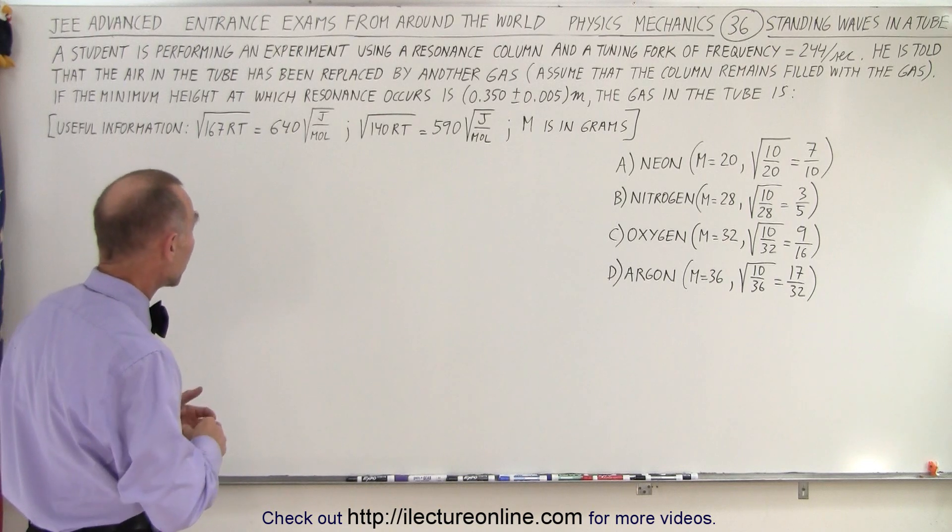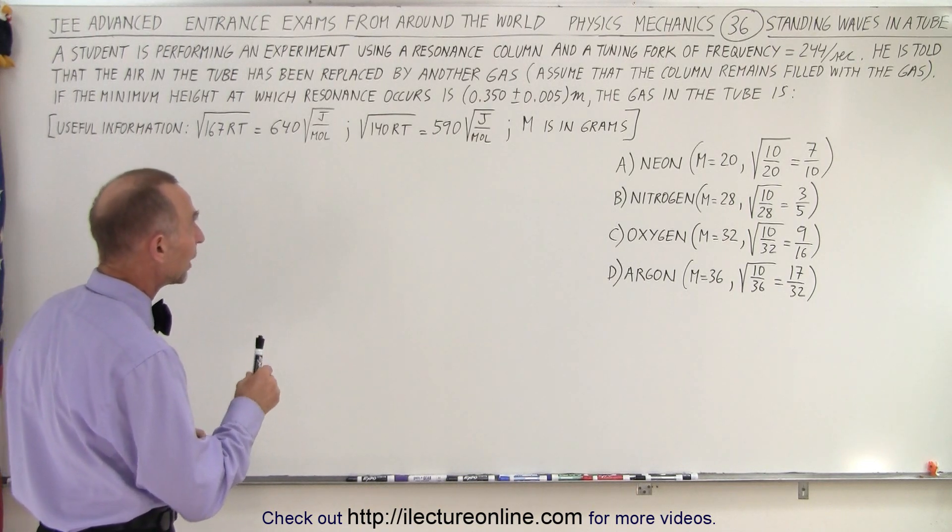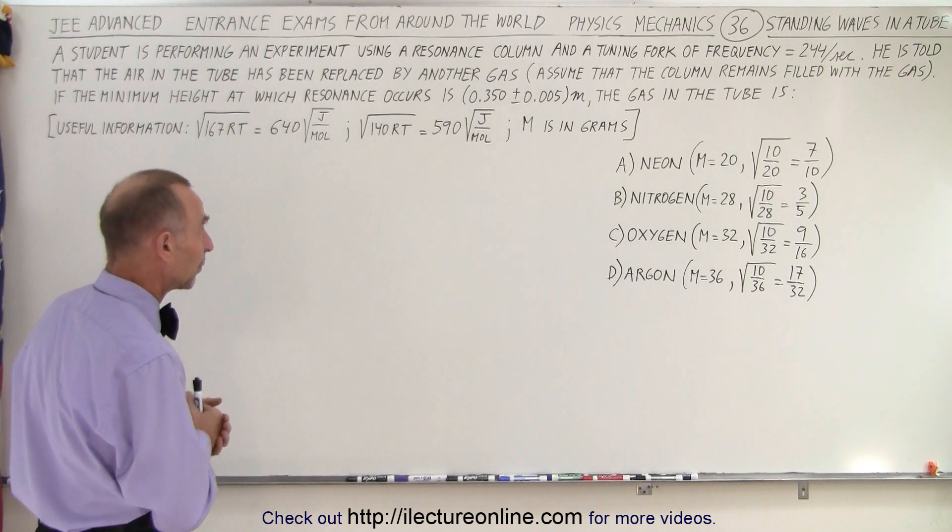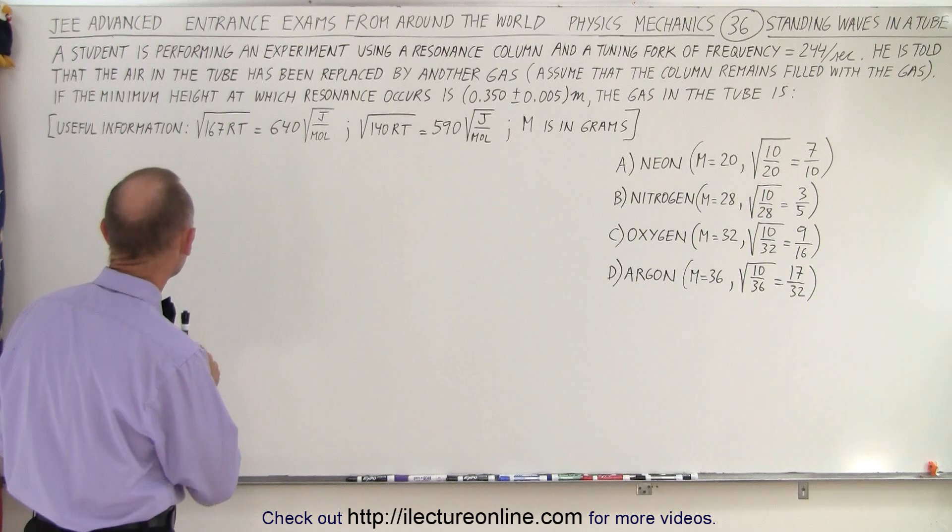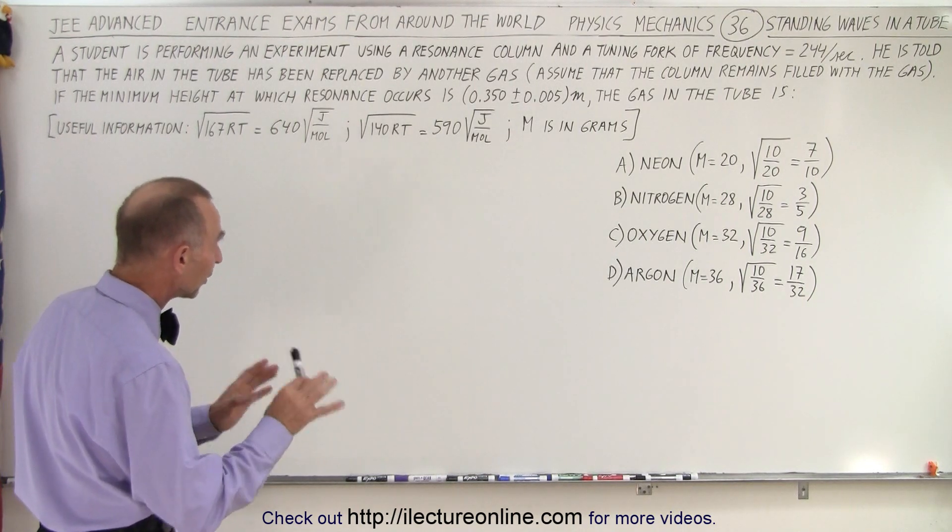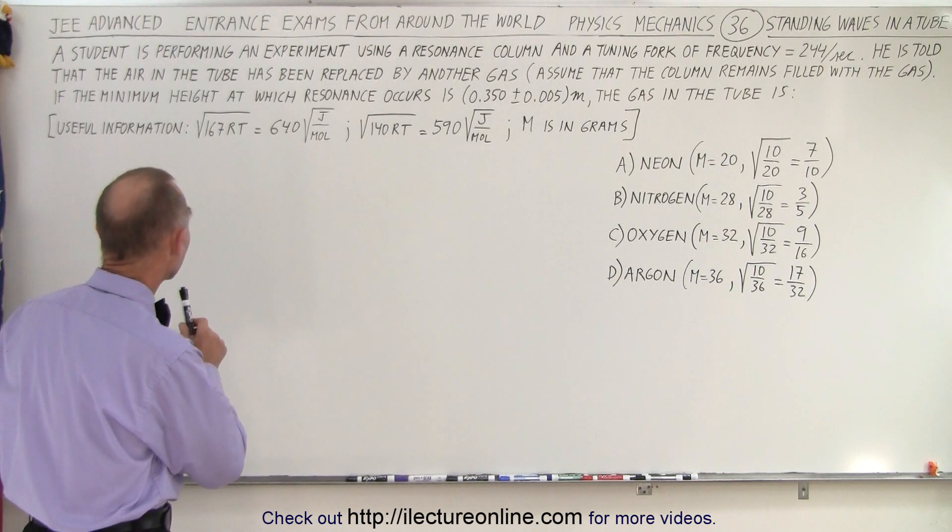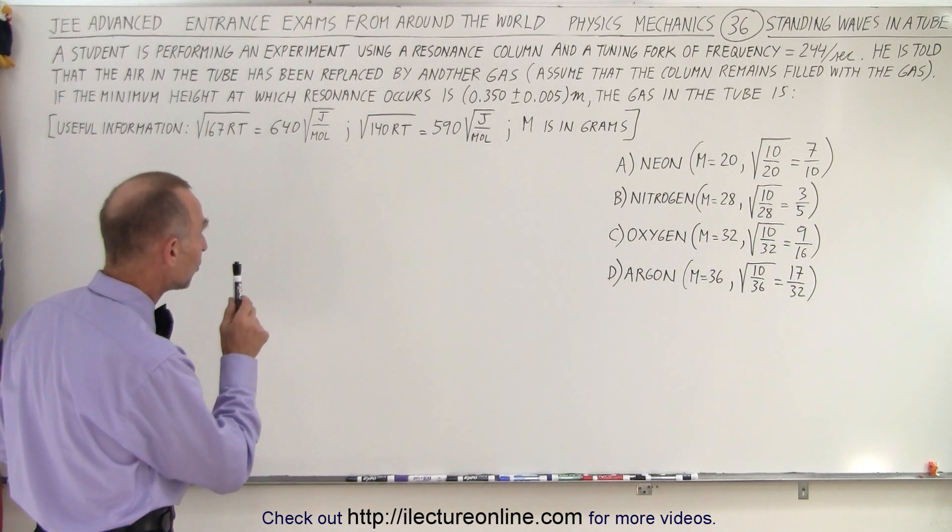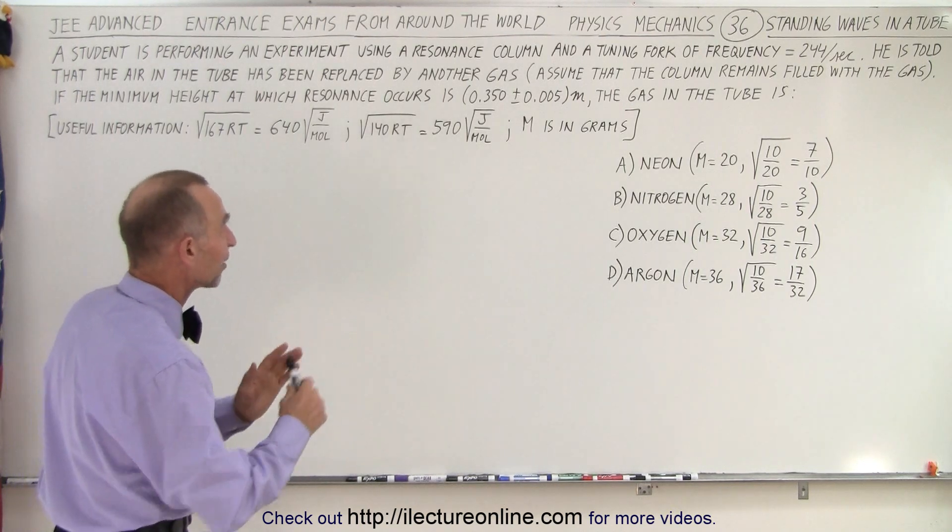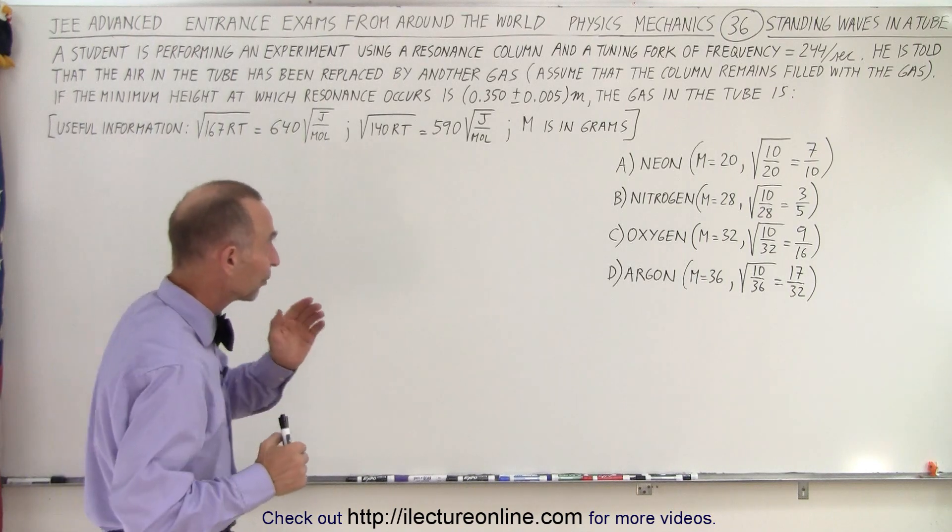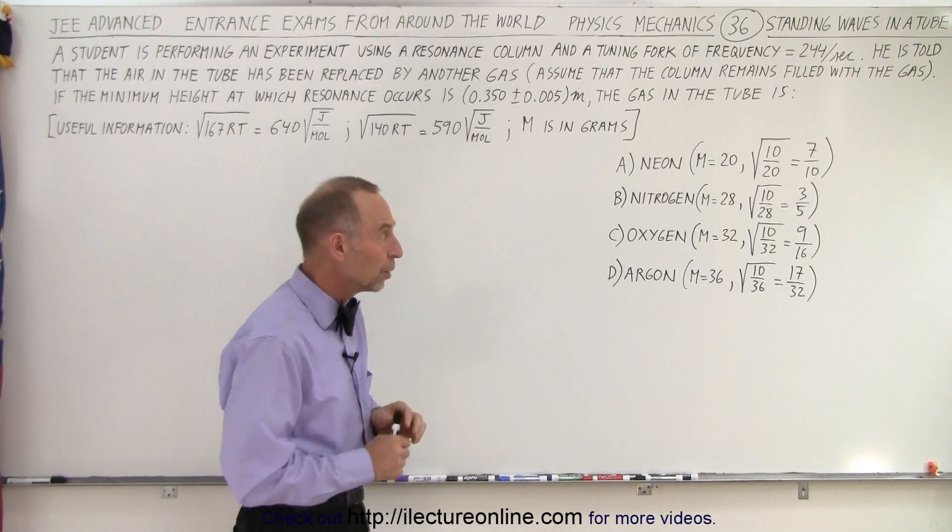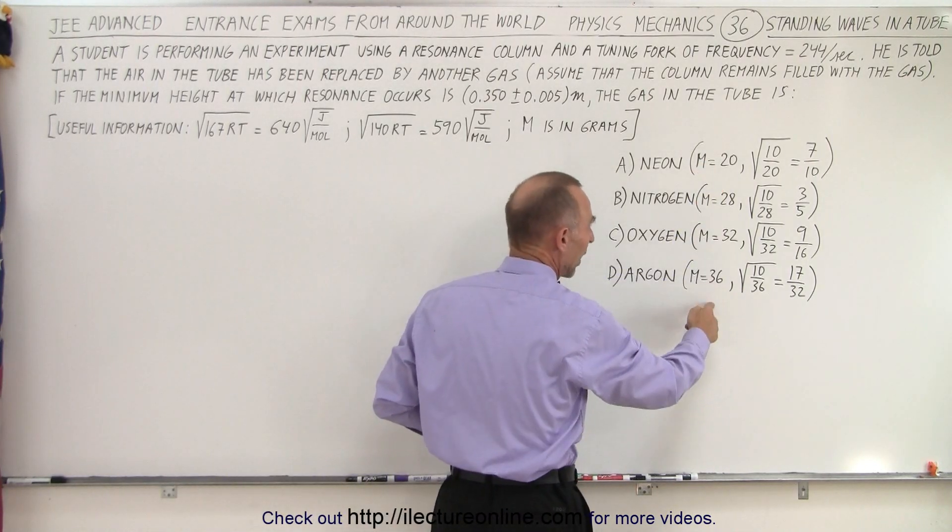A student is performing an experiment using a resonance column and a tuning fork of frequency 244 Hz. He is told that the air in the tube has been replaced by another gas. If the minimum height at which resonance occurs is 0.35 meters plus or minus 0.005 meters, the gas in the tube is either neon, nitrogen, oxygen, or argon. Notice in each case they give us the molar mass in grams.